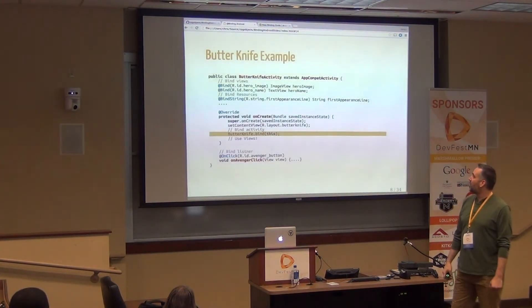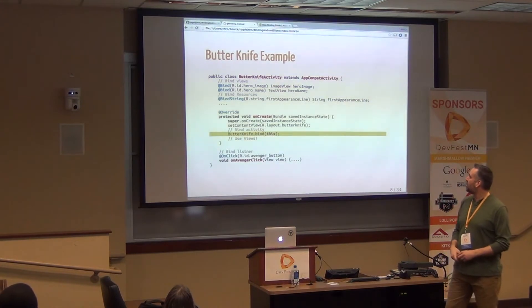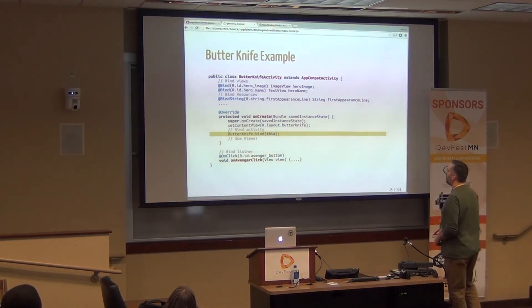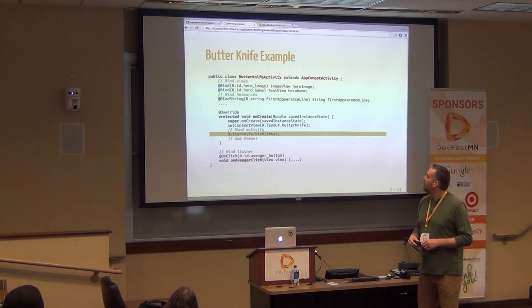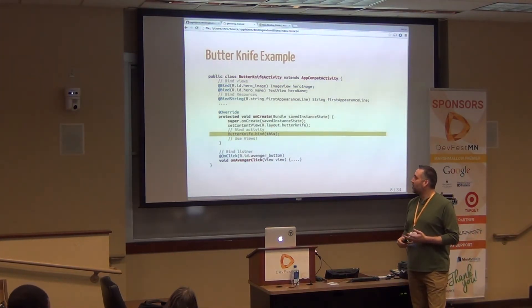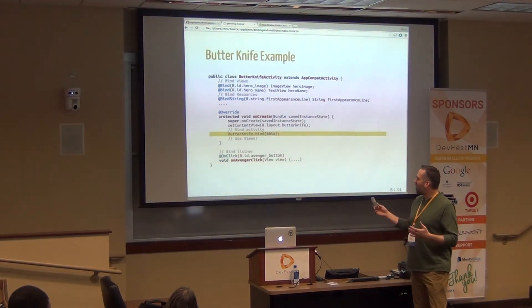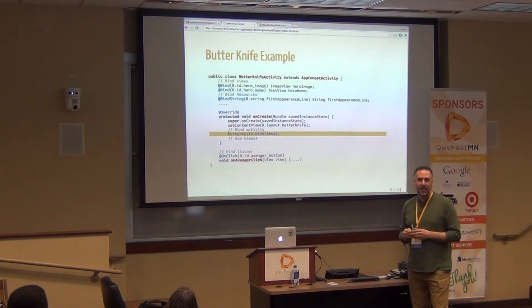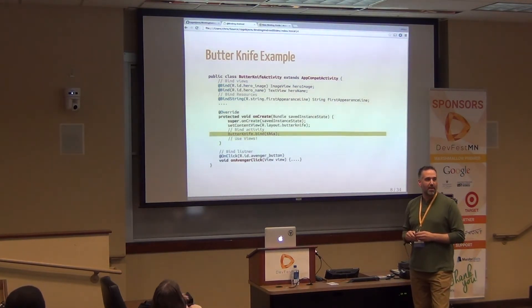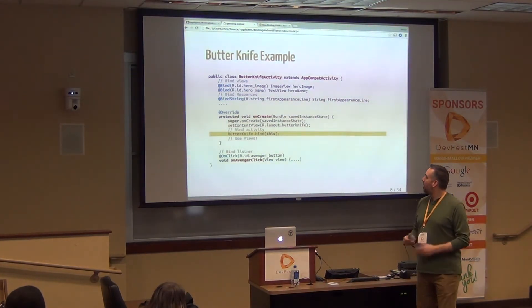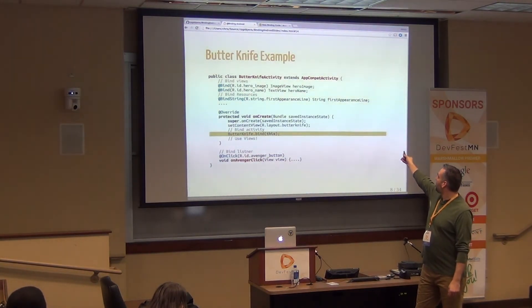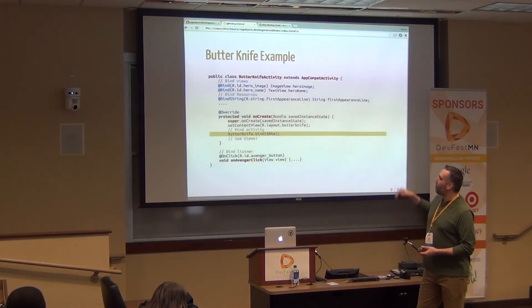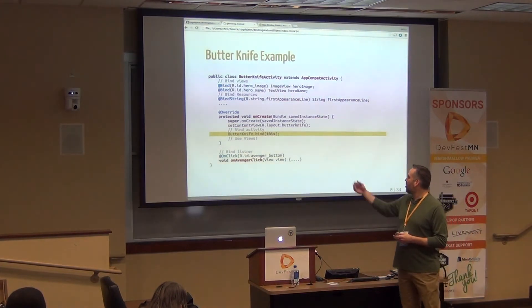Here's a full example of a Butterknife activity from the example project. This is the magic call: Butterknife.bind(). There are a couple of different ways to bind depending on whether you're binding to an activity, fragment, or view holder. If you're binding to a fragment, there is some cleanup you have to do given the fragment lifecycle. But for the most part it's one call, and that call binds the image view, text view, and a string I use for string replacements. Then I have a listener that, when the button is clicked, determines whether the superhero is an Avenger or not.